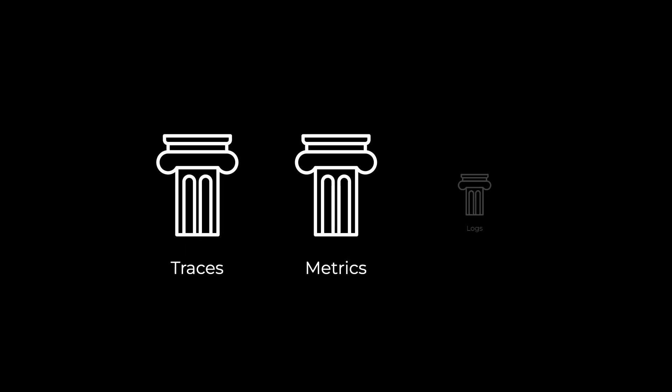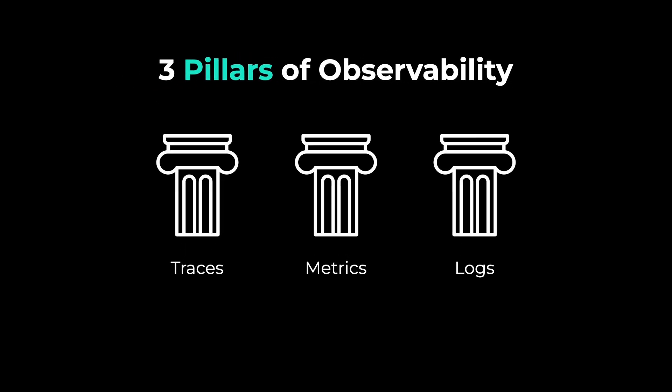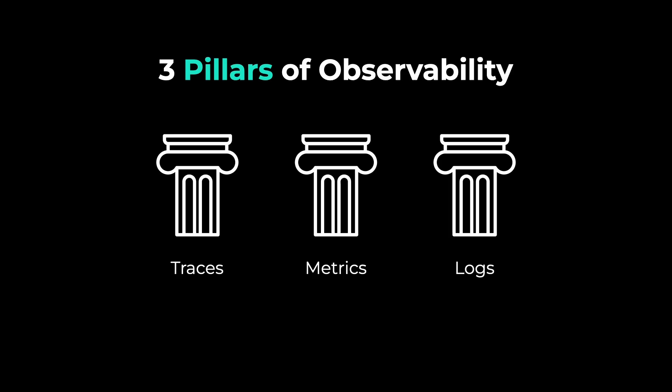Traces, metrics and logs — the famous three pillars of observability. The only problem is that they are not three pillars. So today in this video we'll see why we should not refer to them as the three pillars, why we have been doing that, and how we should refer to them instead.